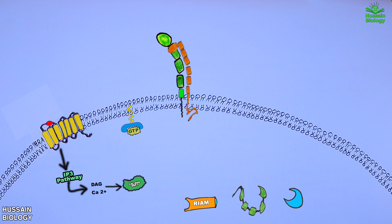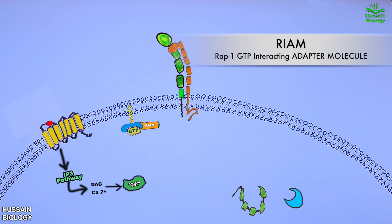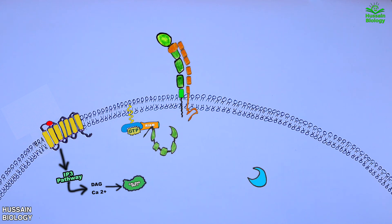Now from here, activated RAP1 protein starts the recruitment of different proteins in this pathway. First of all, RIAM protein is recruited and binds with the RAP1 protein as shown in the animation. Then we have the recruitment of two proteins: first the recruitment of inactive talin protein and then the recruitment of kindlin protein to the plasma membrane, thus making them active.